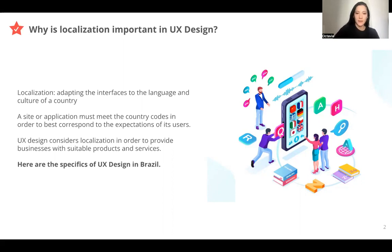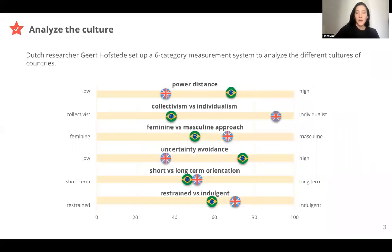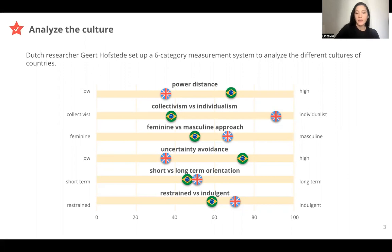Today we're going to talk about Brazil. It's very important to understand the difference between two cultures and that one country has its own culture. For example, we can see that in the United Kingdom and in Brazil, the cultures are very different. The power distance is lower for the United Kingdom and higher for Brazil. However, about the term orientation, it's almost similar for Brazil and the UK. So it's very important to know the culture of one country to adapt the interface to that specific country.